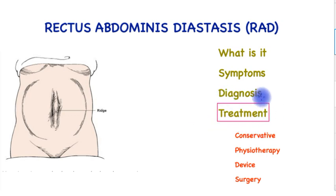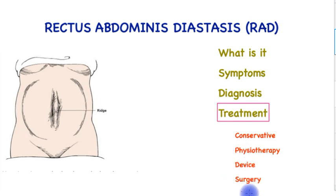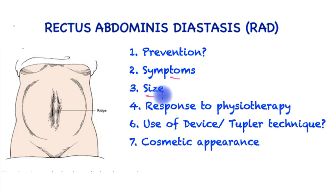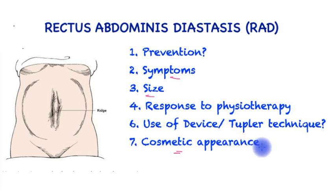Treatment options include watch and wait, physiotherapy as a first measure, a device with unconfirmed benefit, and surgery as a solution. There are three main determinants when considering treatment: first, symptoms such as backache and poor posture; second, the size of the diastasis and the disability it produces; and third, cosmetic appearance — whether there is loose skin and a jelly-like feeling to the abdominal wall.